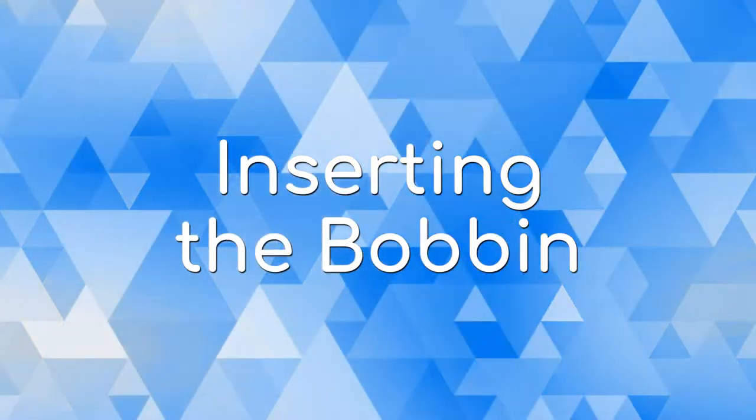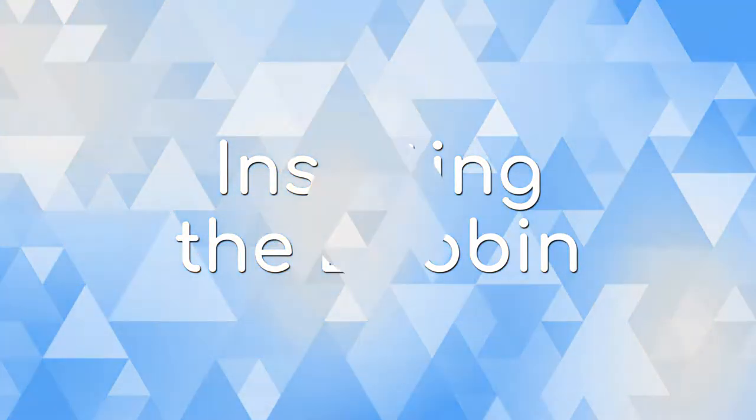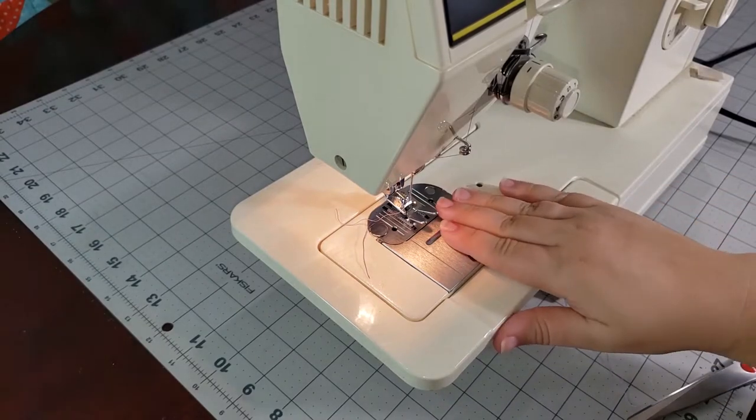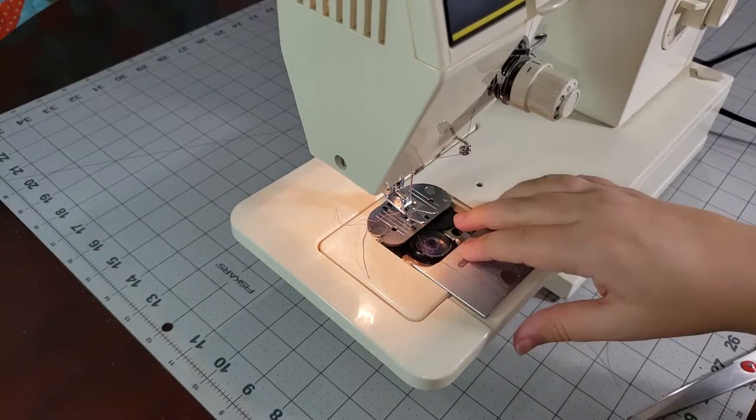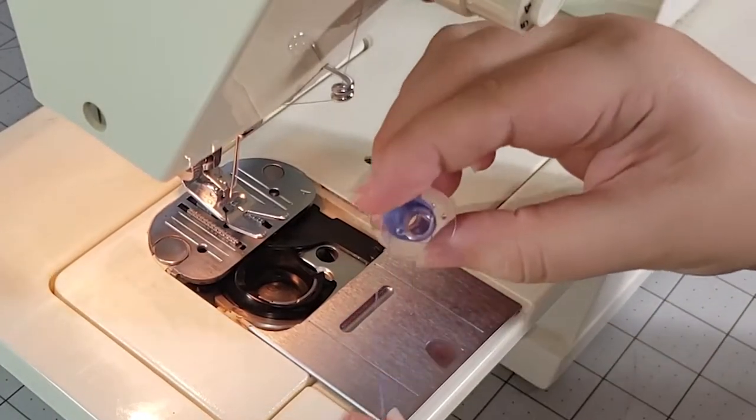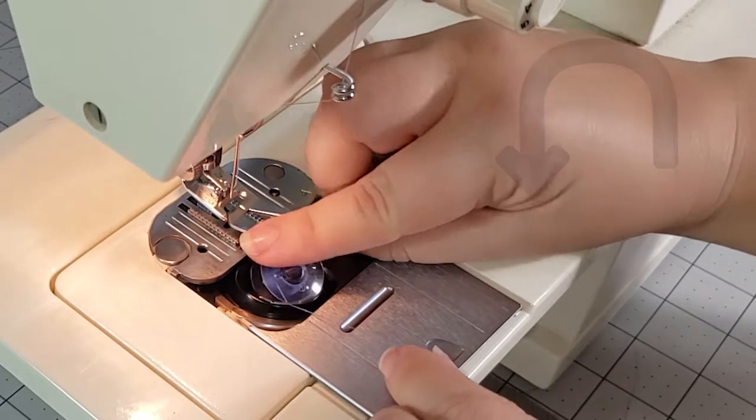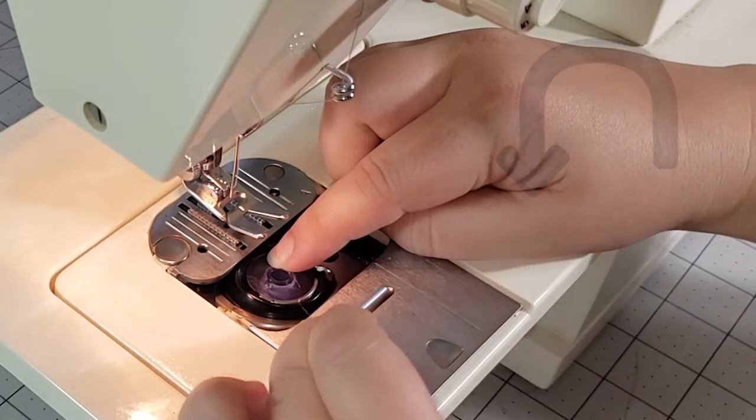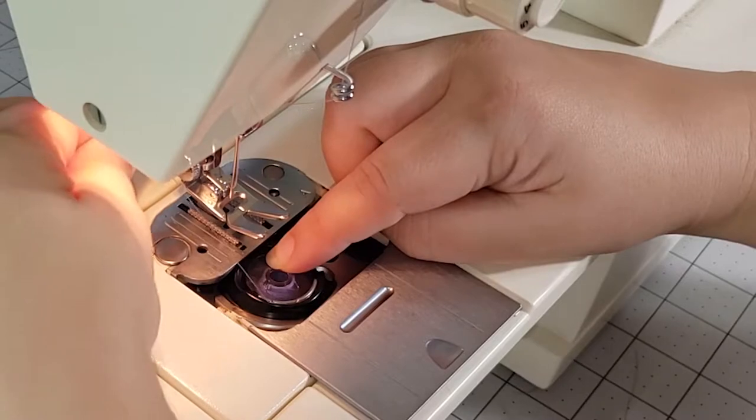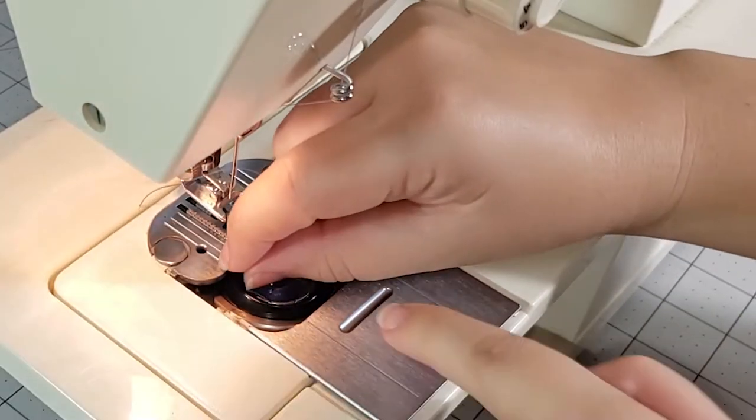Inserting the bobbin. Make sure that the presser foot is in the raised position and slide open the bobbin cover. Place the bobbin into position with the thread leading out counterclockwise. Guide the thread into the notch of the front, into the slot, then out the notch at the left.